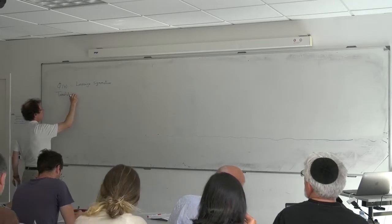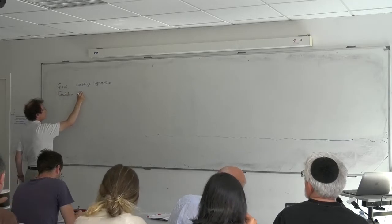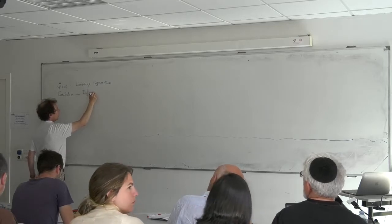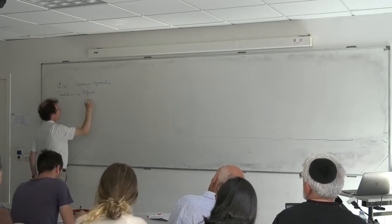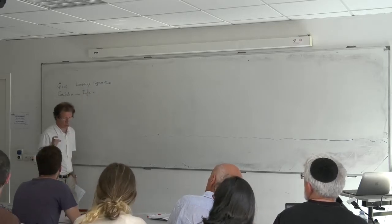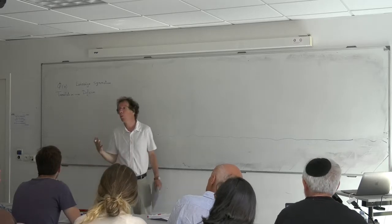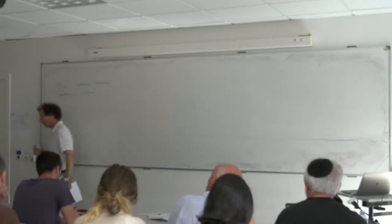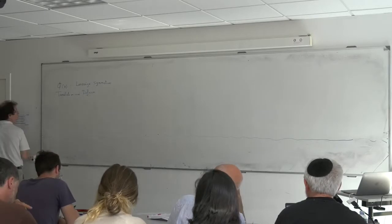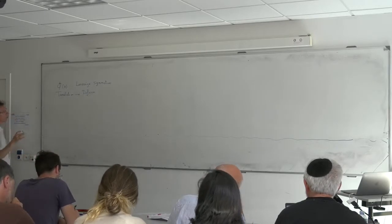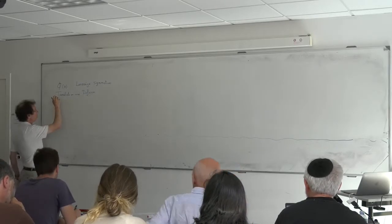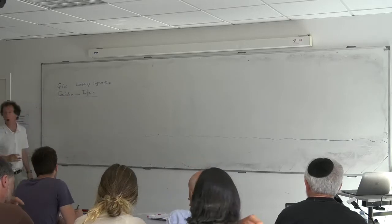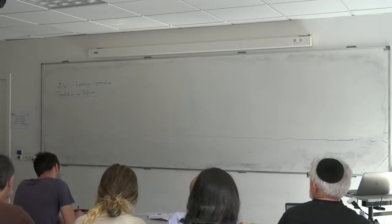Then we'll look at the group of diffeomorphisms, which is much more complicated. First I'm going to try to explain what it means to linearize in a weak way, and then we'll look at the Fourier transform, which is the standard tool to linearize actions of groups, and see why it's going to fail in this situation.